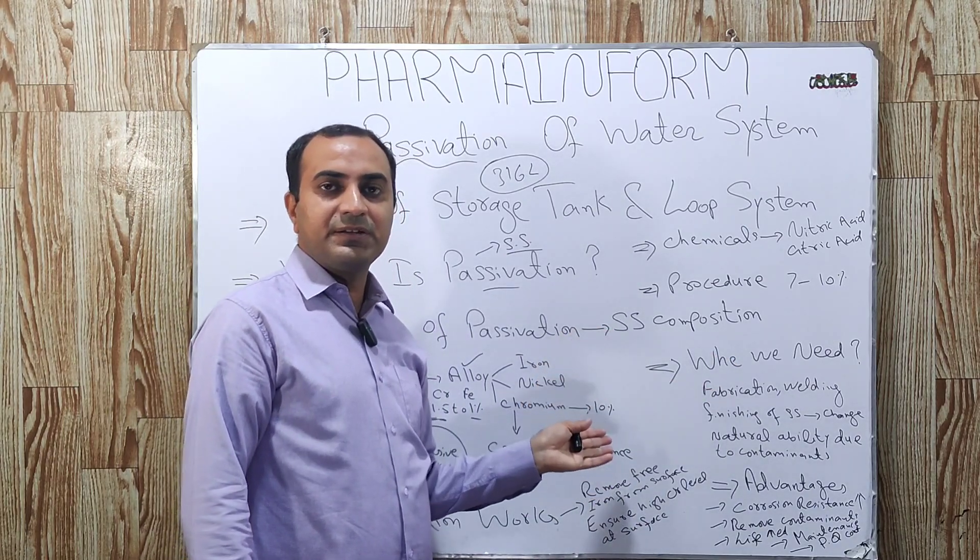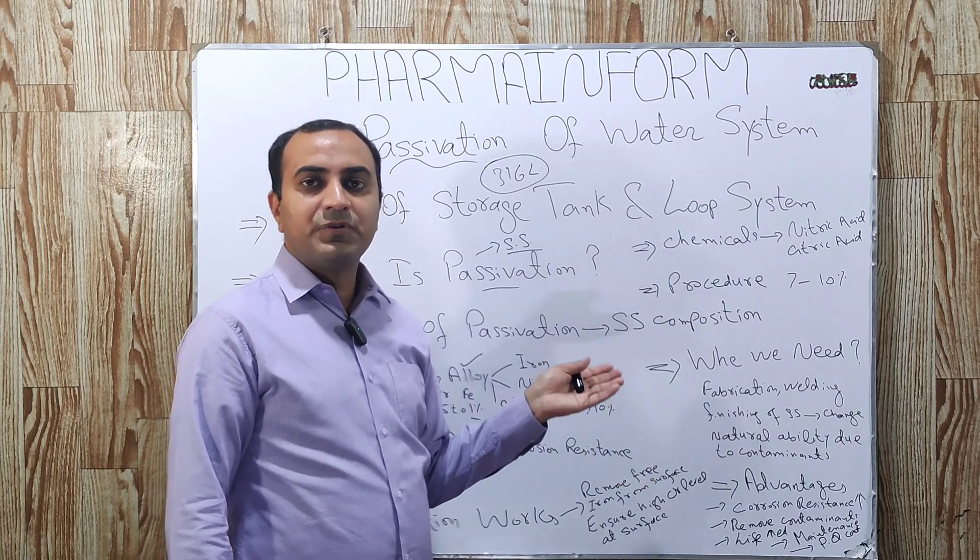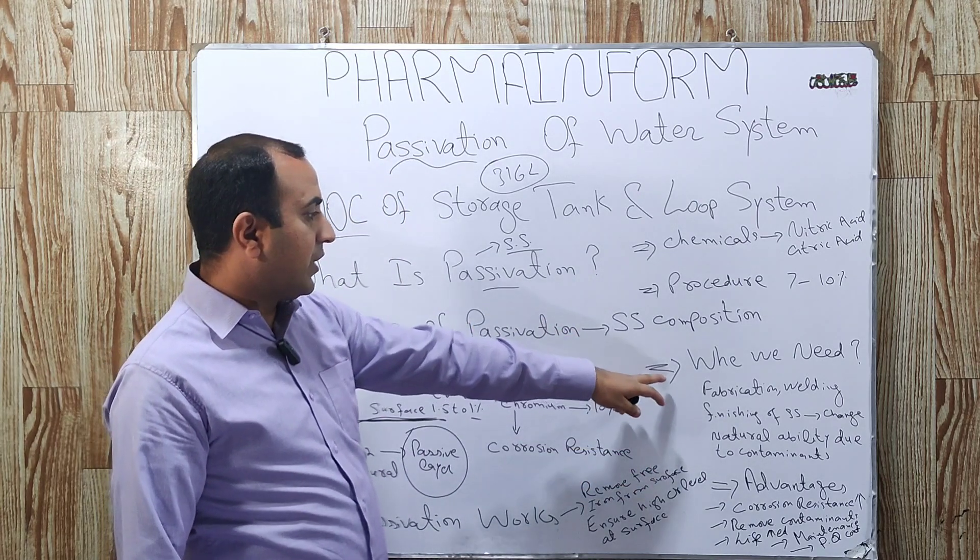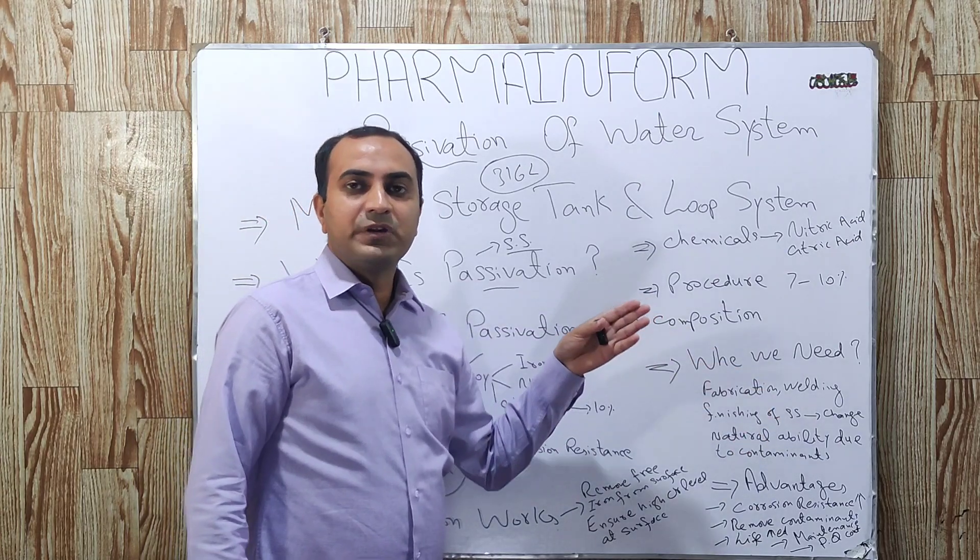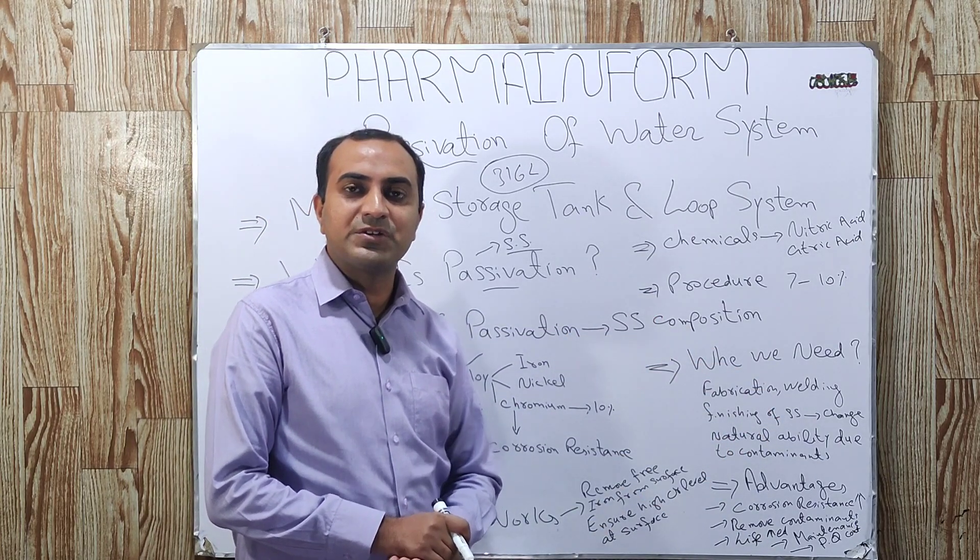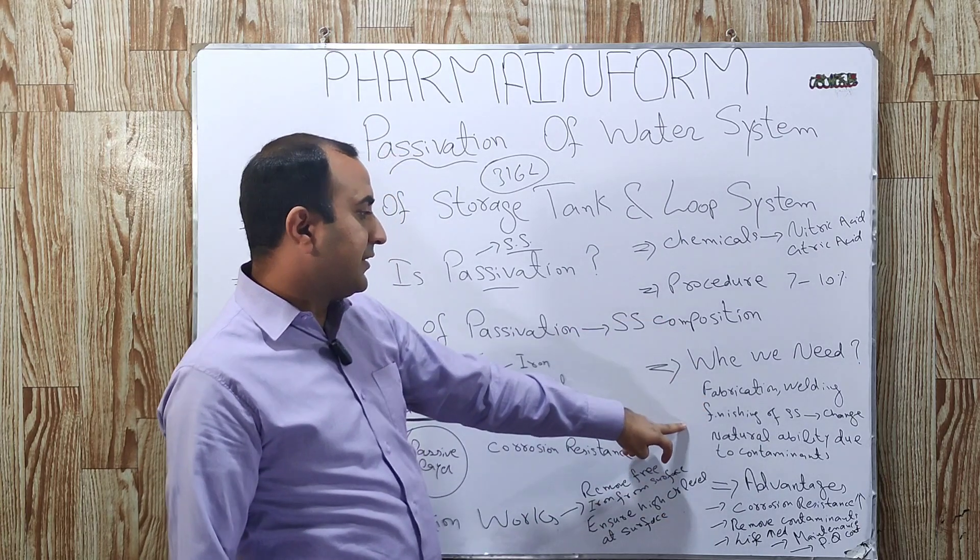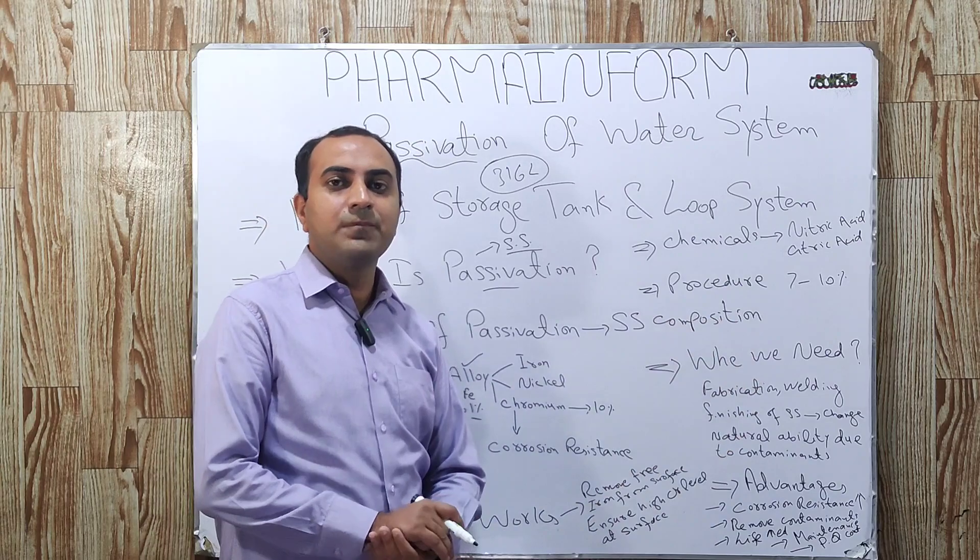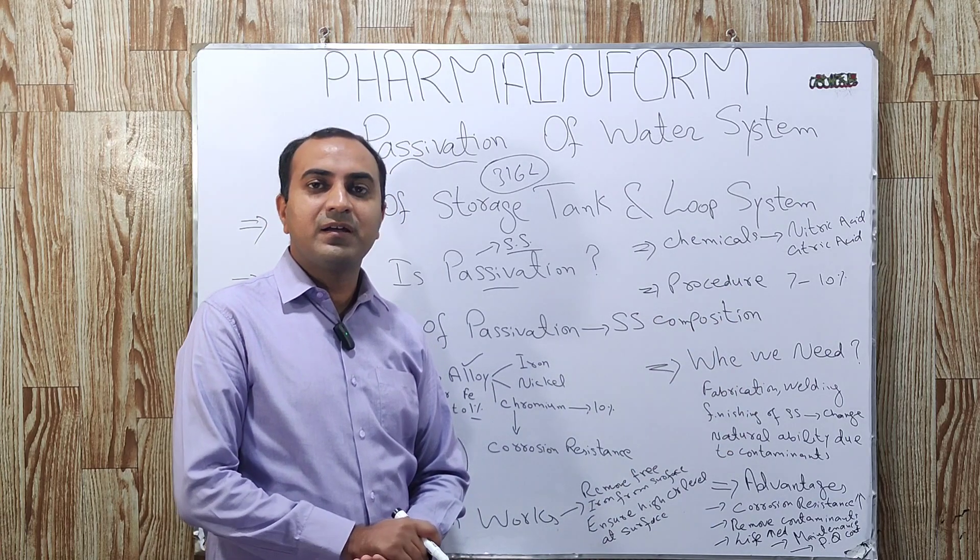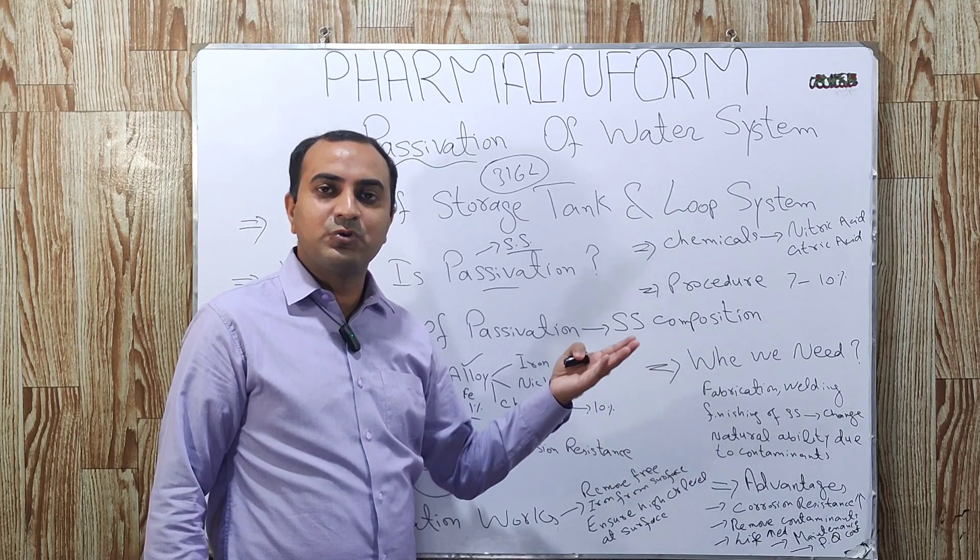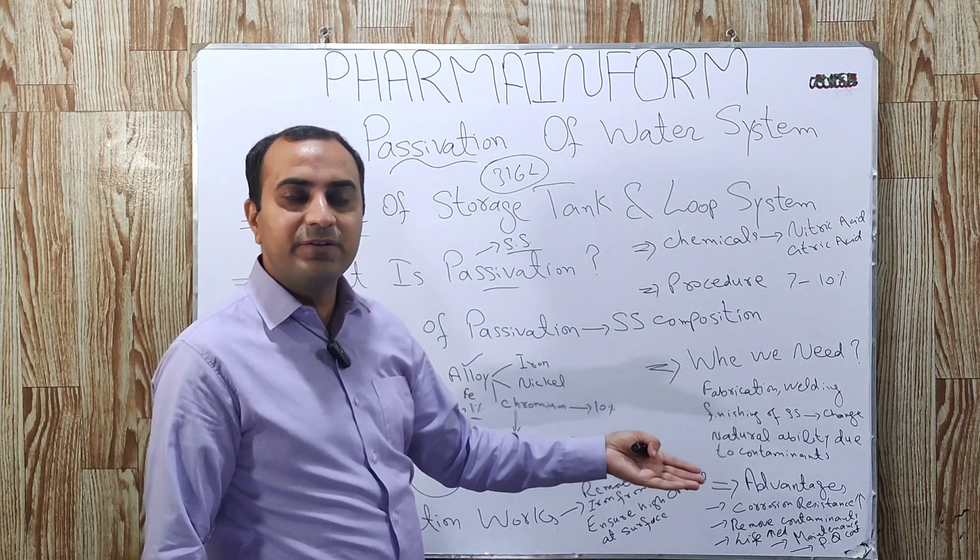When we need passivation? As we discussed that, naturally there exists a layer which is known as passive layer for corrosion resistance. But why we need passivation? We need passivation whenever we do any modification or fabrication or finishing to the stainless steel or there is any welding to the stainless steel. We know that there may be many joints for the loop system and we use welding. Orbital welding is used.